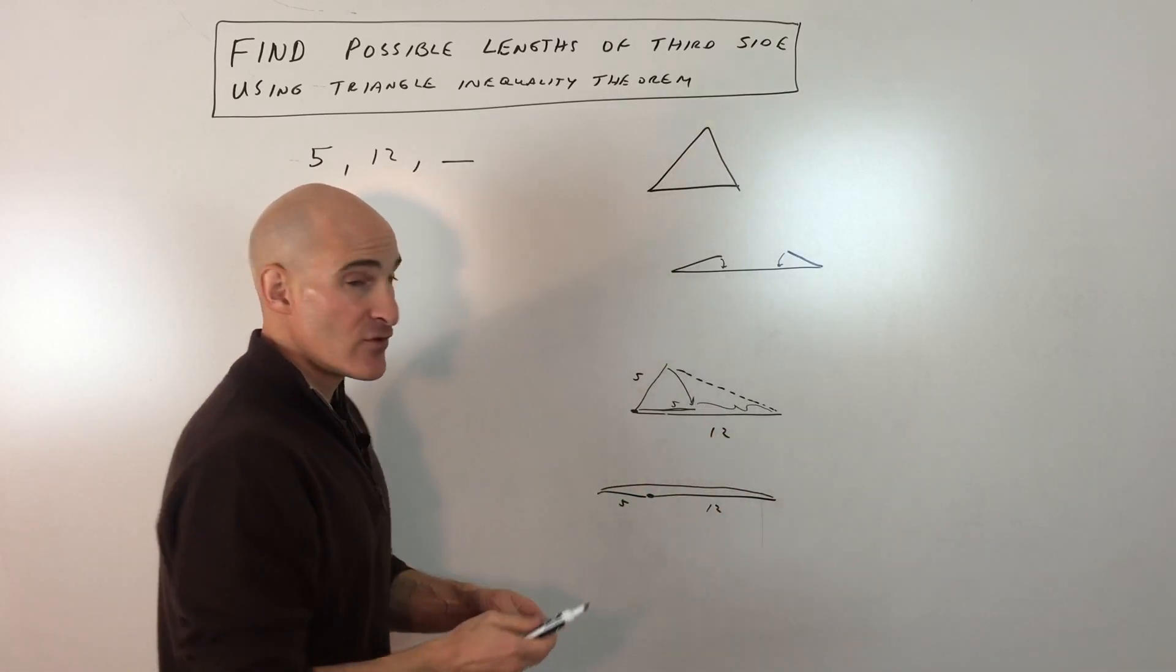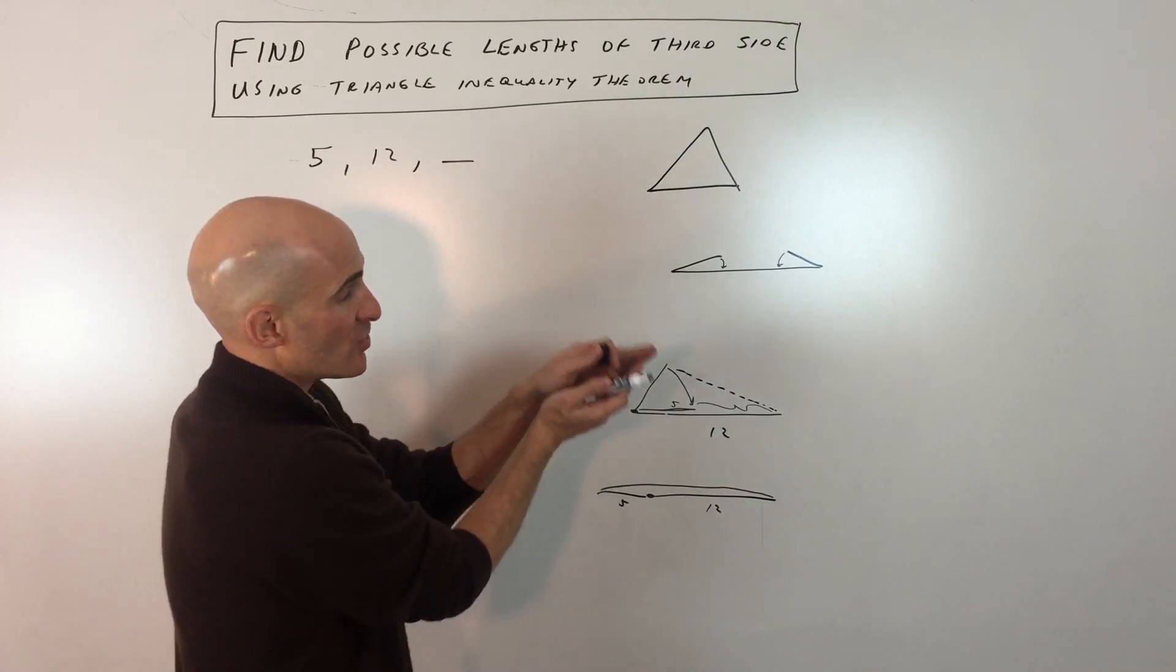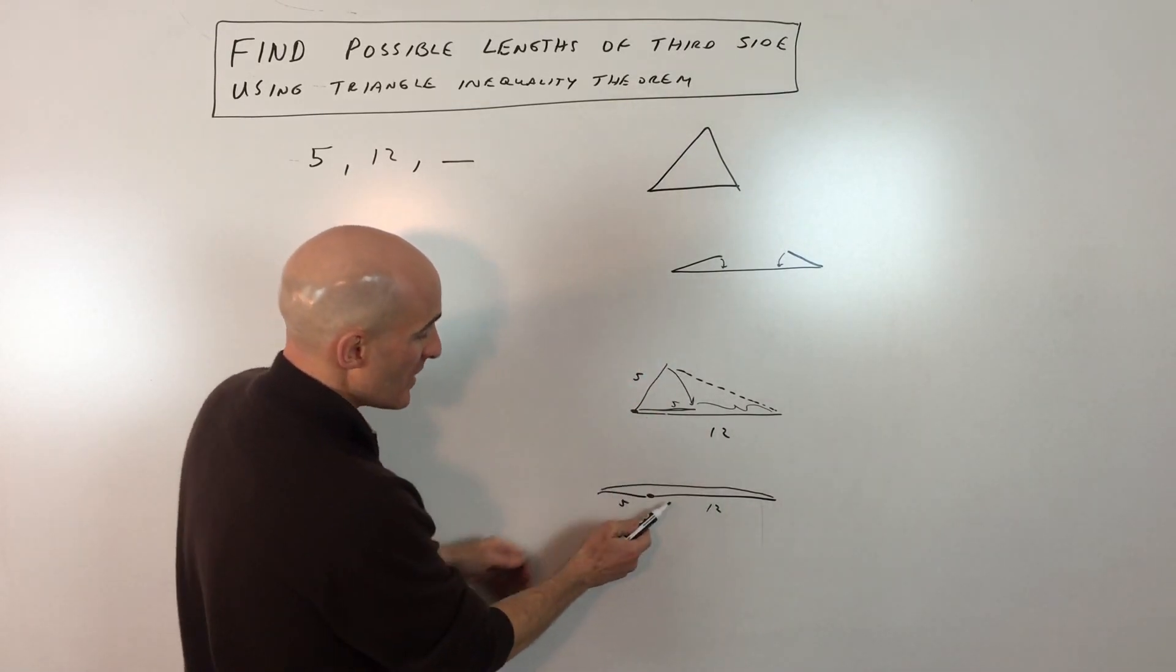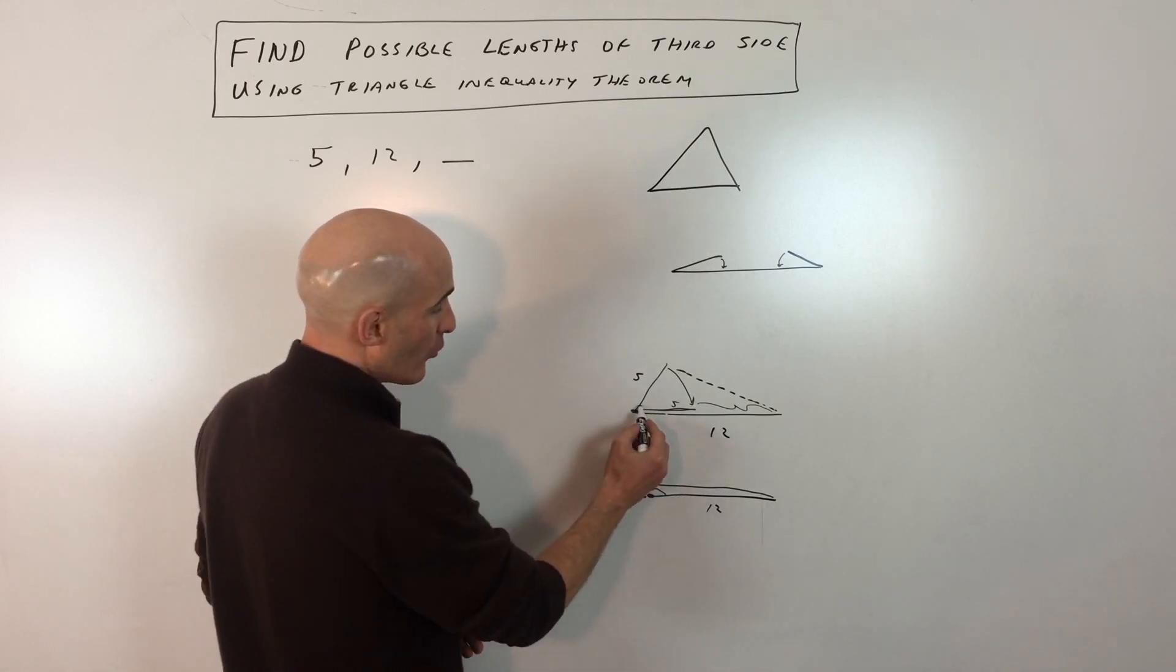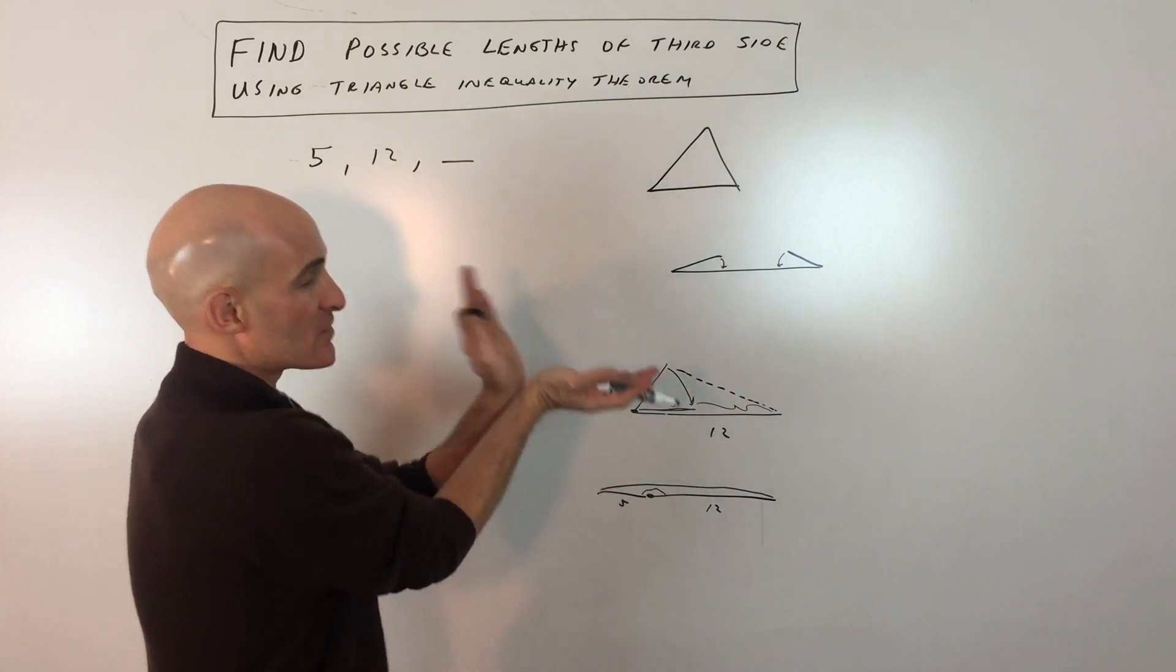So essentially, if you think about it as a hinge, the most extreme example is when you make it like a 179.9 degree angle, or you make it like a 0.1 degree angle. So it's either folding this way or it's folding like that.